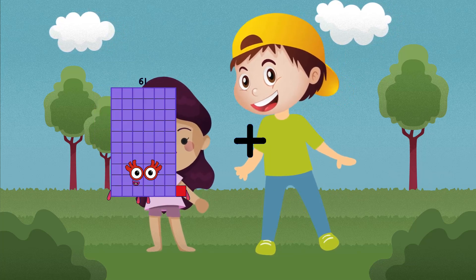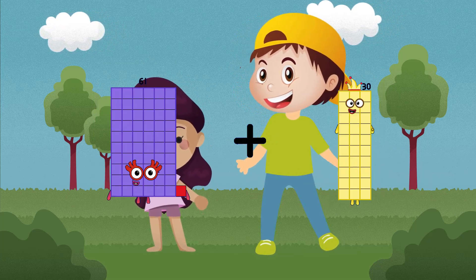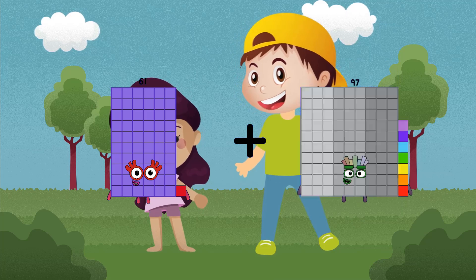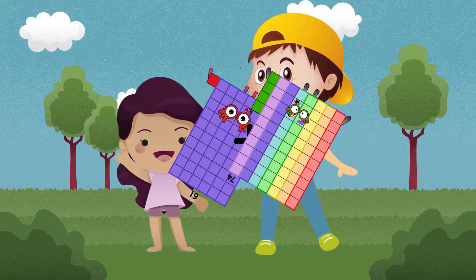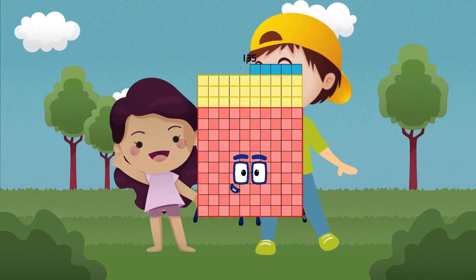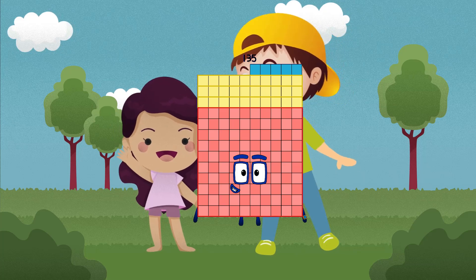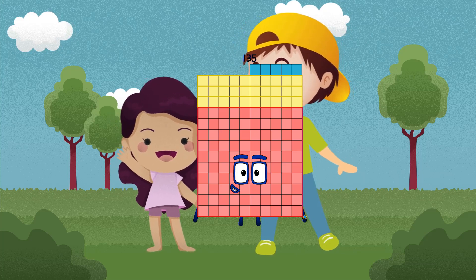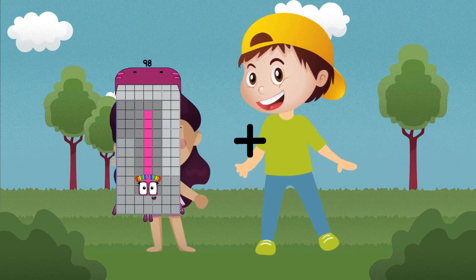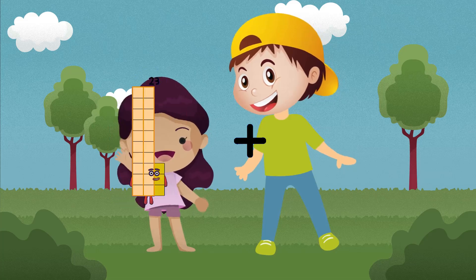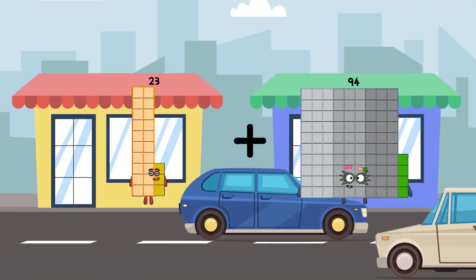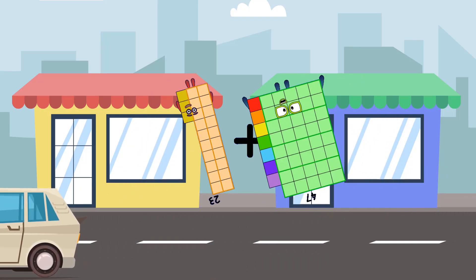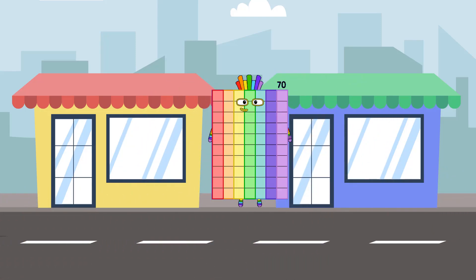61 plus 74 equals 135. 23 plus 47 equals 70.